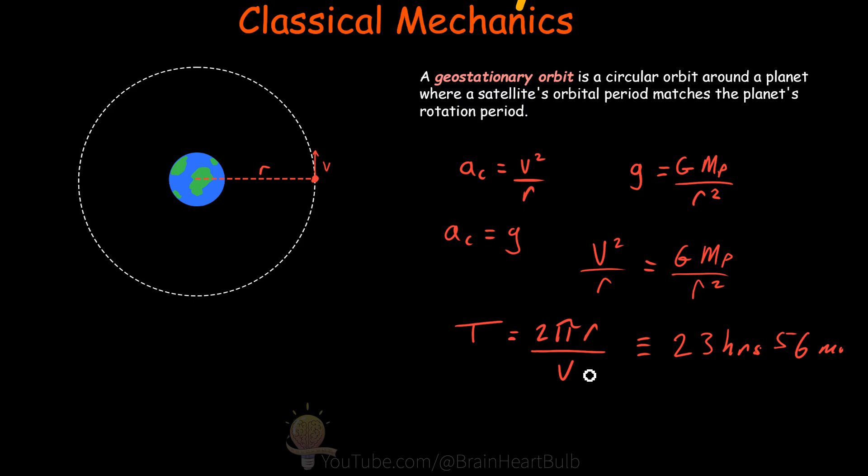Well, let's first rearrange this equation here to make velocity the subject. So the velocity of the satellite is equal to 2 pi r divided by the period, which is 23 hours and 56 minutes. Let's substitute this side of the equation into this velocity here. What do we get?